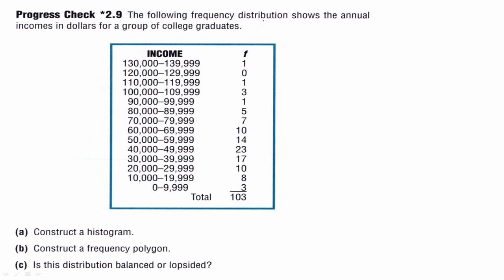The following frequency distribution shows the annual incomes in dollars for a group of college graduates. So we have to join the income. In 130,000 it is less than 140,000; in 120,000 it is less than 130,000. The next value is frequency — that is the corresponding frequency. The first step is to construct the histogram, and that is to construct the frequency polygon and the distribution balance.